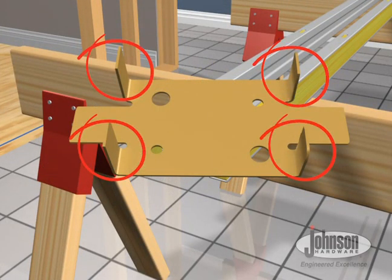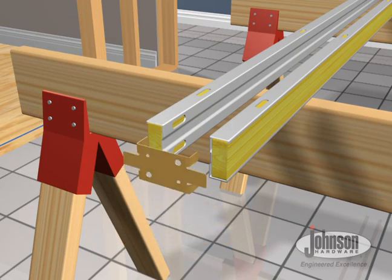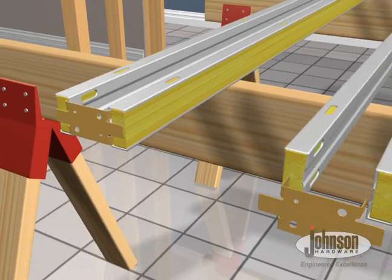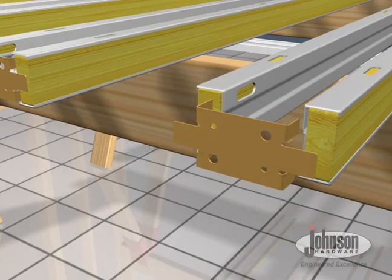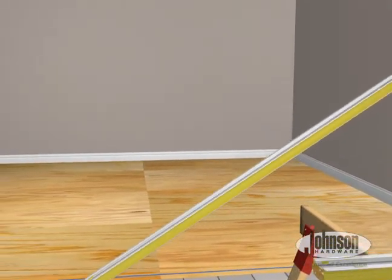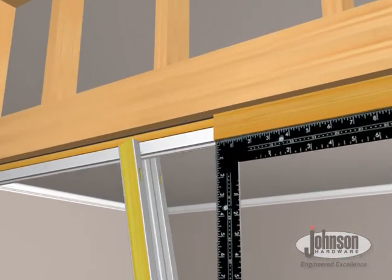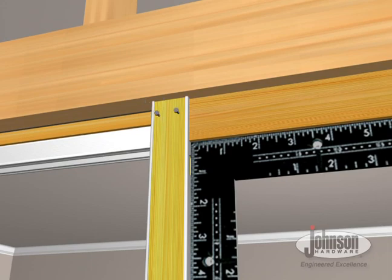Slip fingers of floor plate into split studs as shown. Next, butt split studs against header nailer, plumb and square split jams, then nail into place.